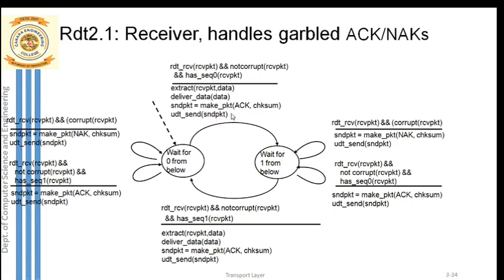Once the acknowledgement packet is sent, the receiver moves on to the new state - waiting for the second packet to arrive, which is the packet with sequence number one. Here again the same conditions are checked, but first we look at other possibilities.